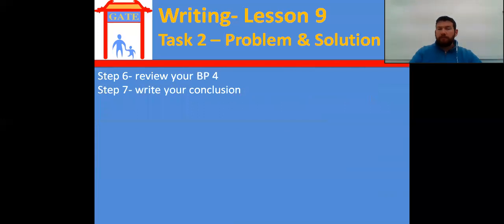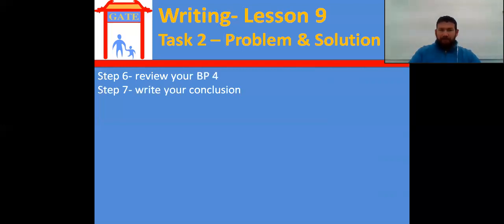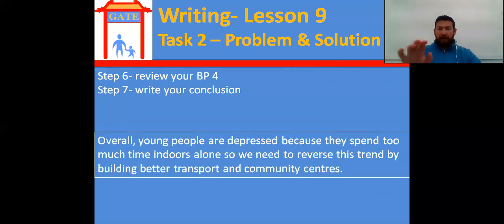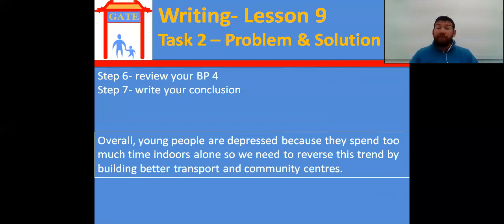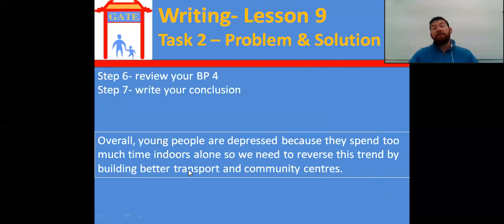So your conclusion. Write your conclusion and come back. Look at mine: 'Overall, young people are depressed because they spend too much time indoors alone. So we need to reverse this trend by building better public transport and community centers.' So I mentioned community centers for playing video games and subway systems for better transport. Fairly simple conclusion there.